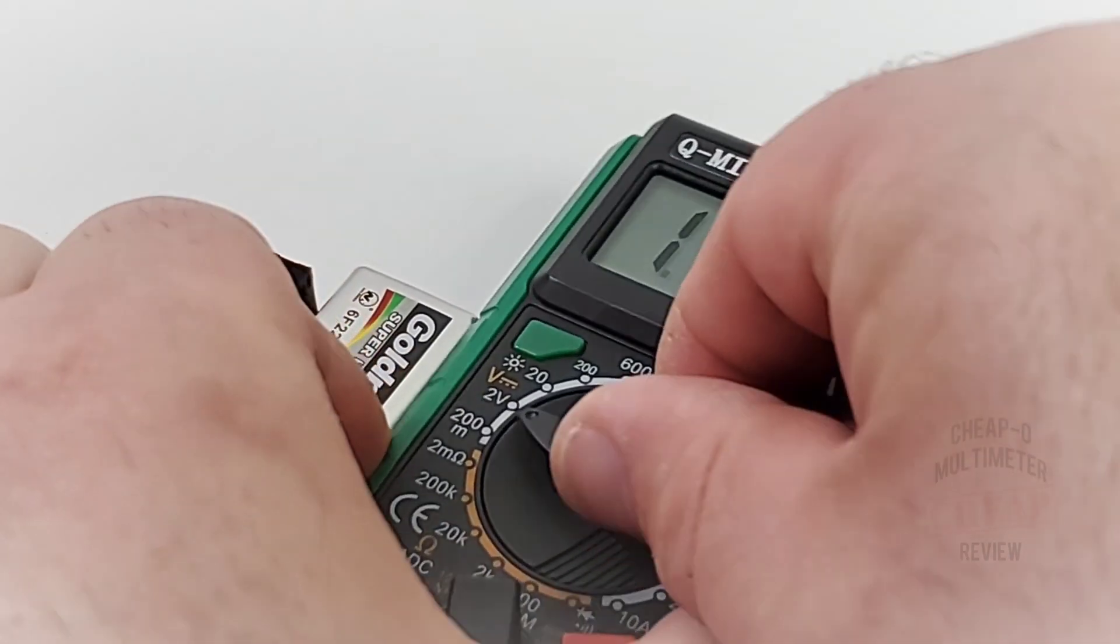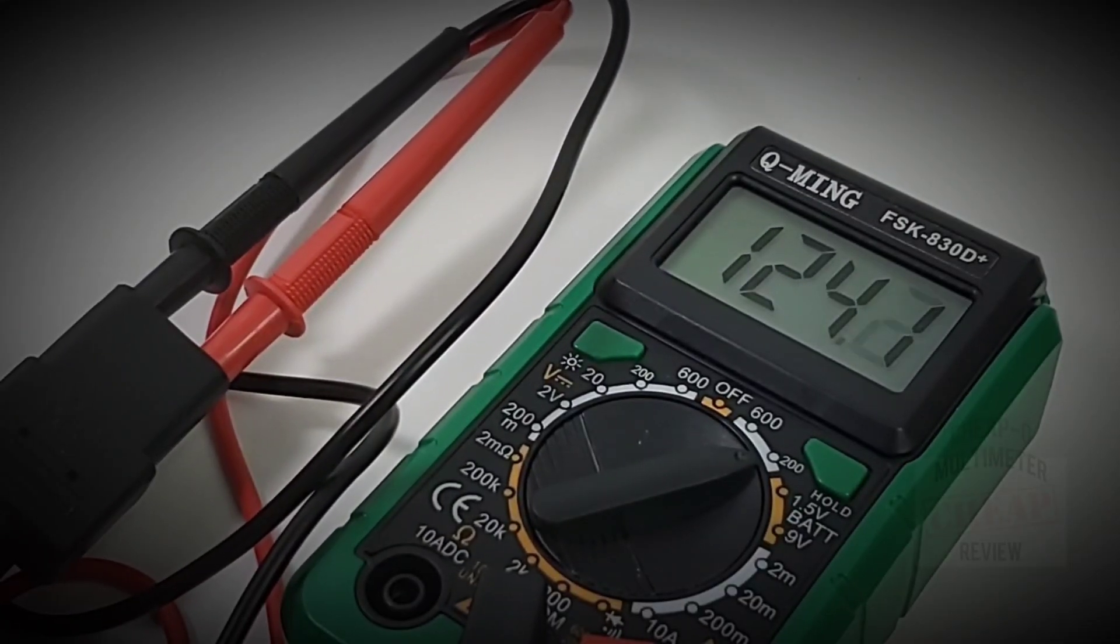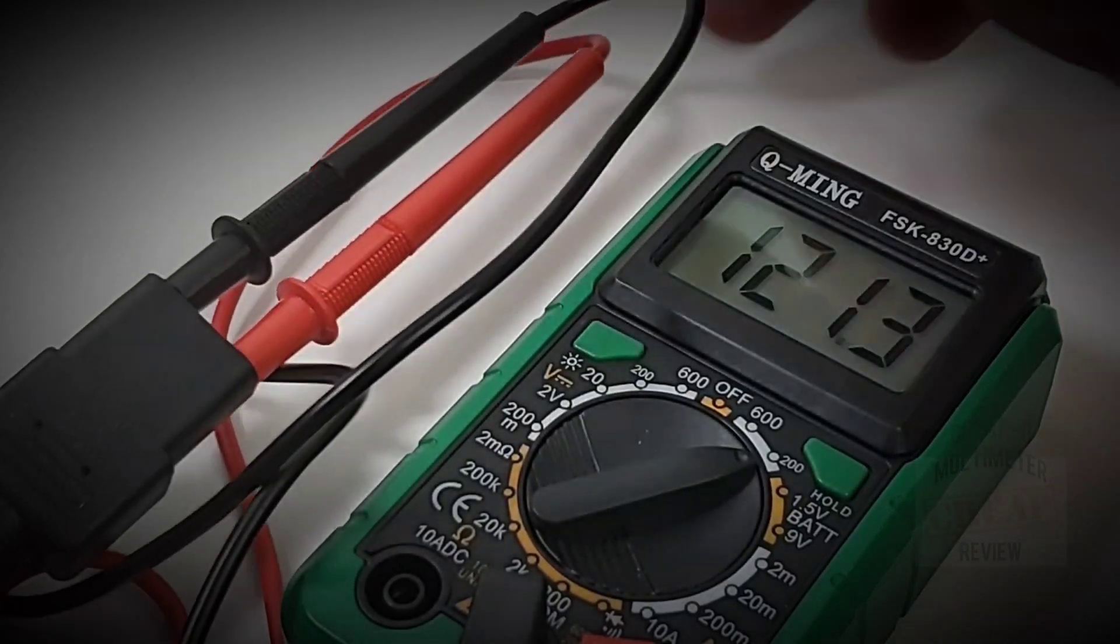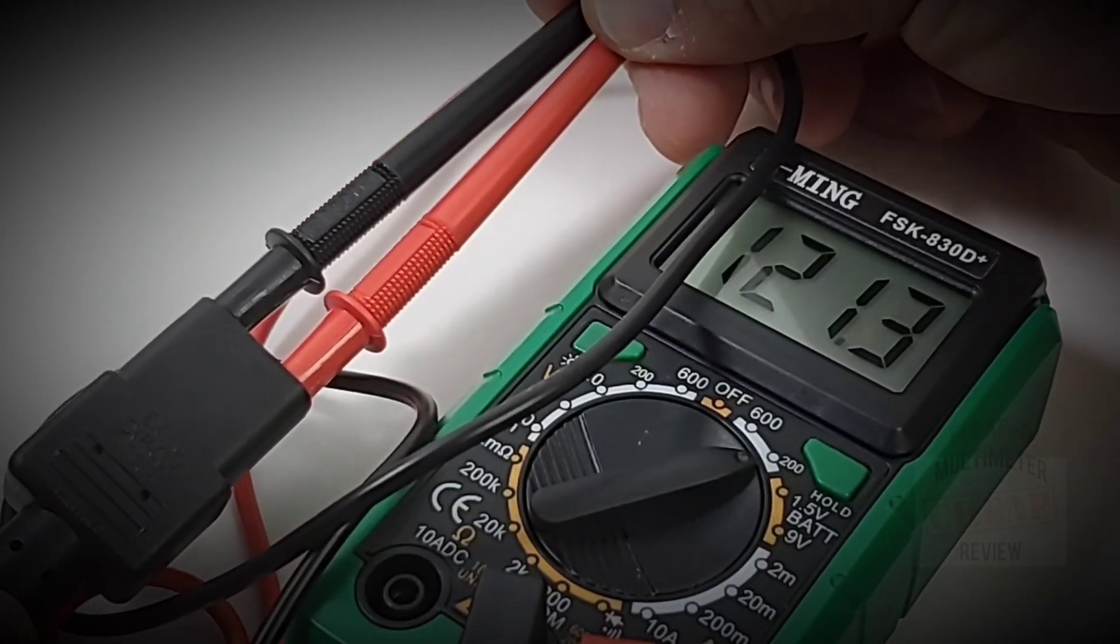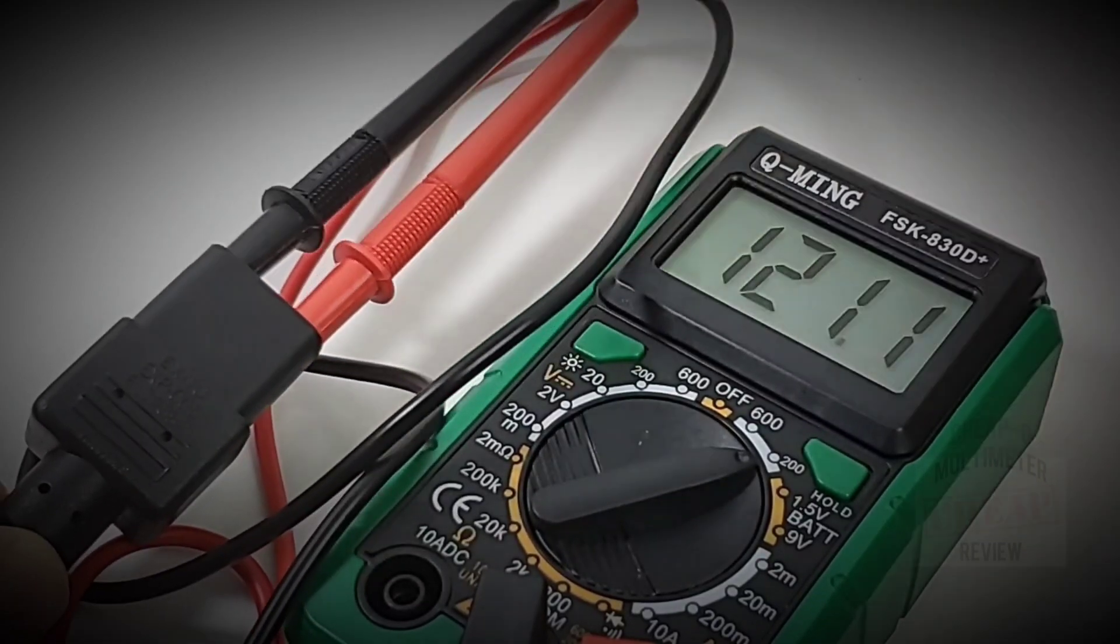Let's try 2.5 volts. Now we're gonna be over so we have to change that selector switch, move it one up and 2.50 volts spot-on. AC volts, right now 120 volts, what we should be looking at. 121, pretty well spot-on.